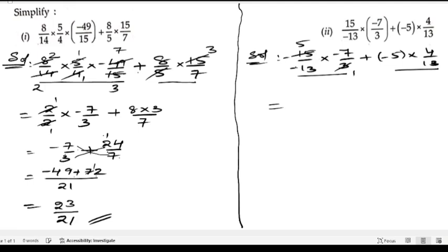The first number is negative: -5/13 × (-7). Minus plus into minus is minus. Five fours are 20, so: -20/13. Minus into minus is plus, and five sevens are 35.